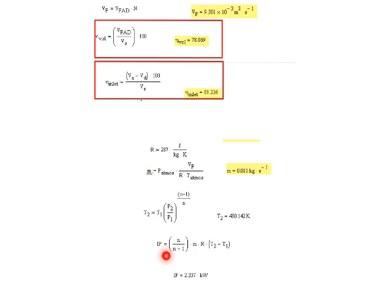The indicated power using the formula for compressors, n/(n-1) multiplied by the mass flow rate times R times the difference in temperature, gives us an indicated power of 2.337 kW. This ends the solution for the example.